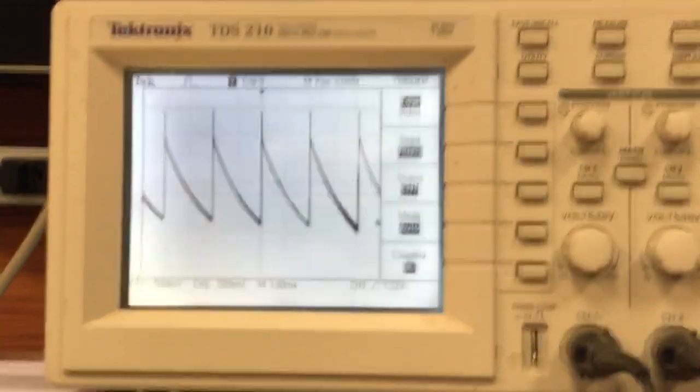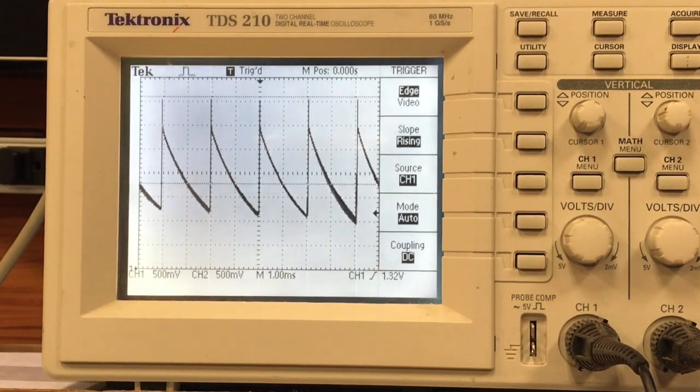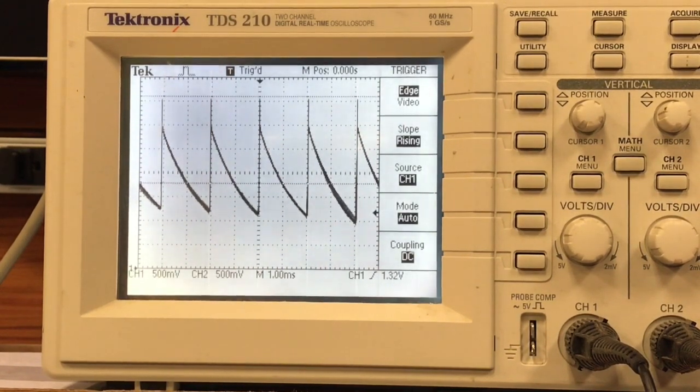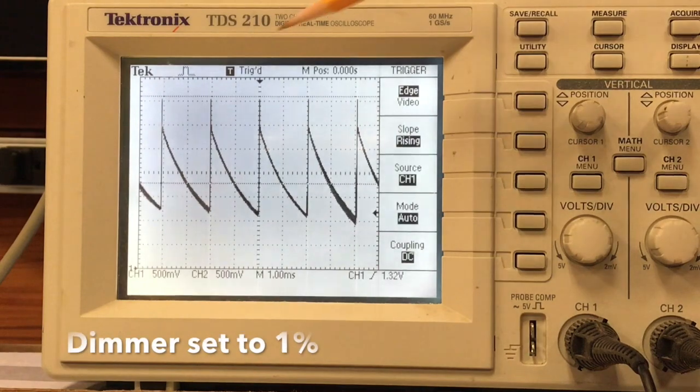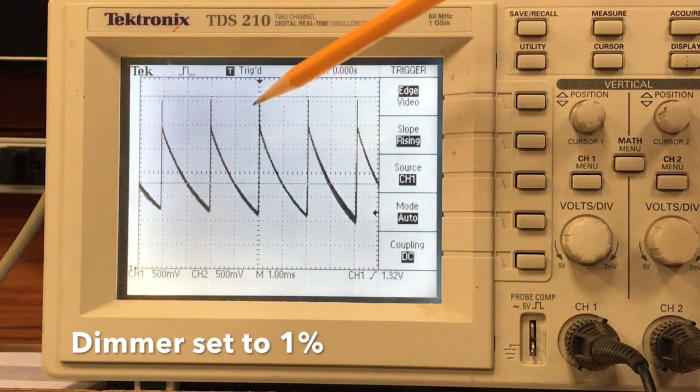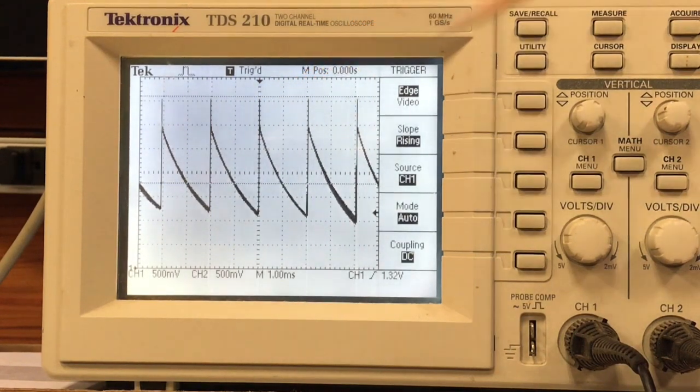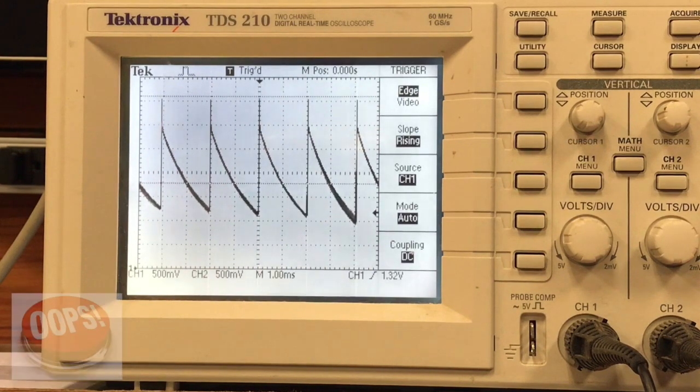Let's go back to the scope. And right now, I have this set at 1% on the dimmer. That means you can see this little spike up here. It's turned on for 1% of the time and then it's turned off for 90% of the time.